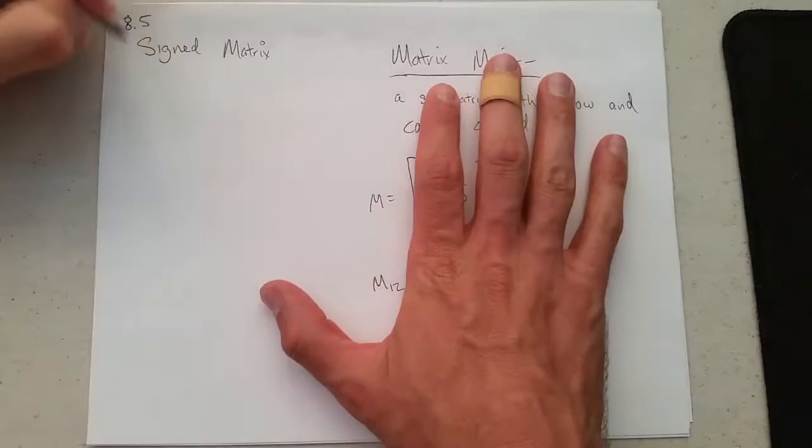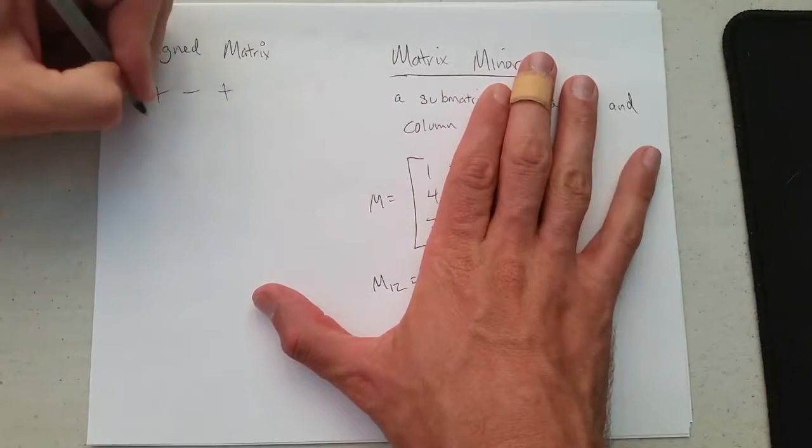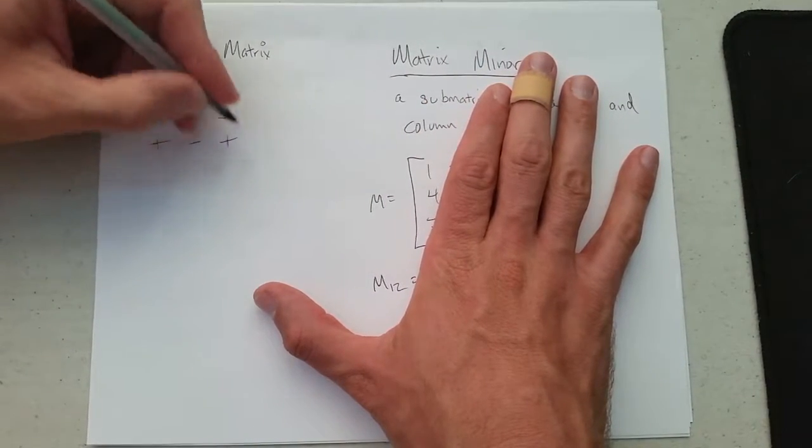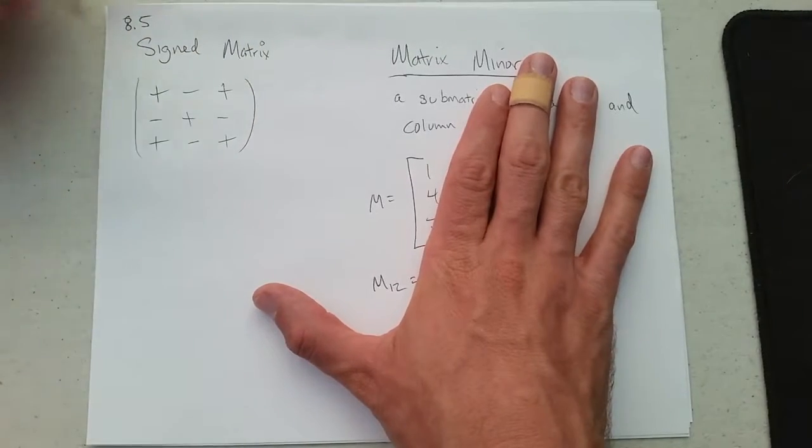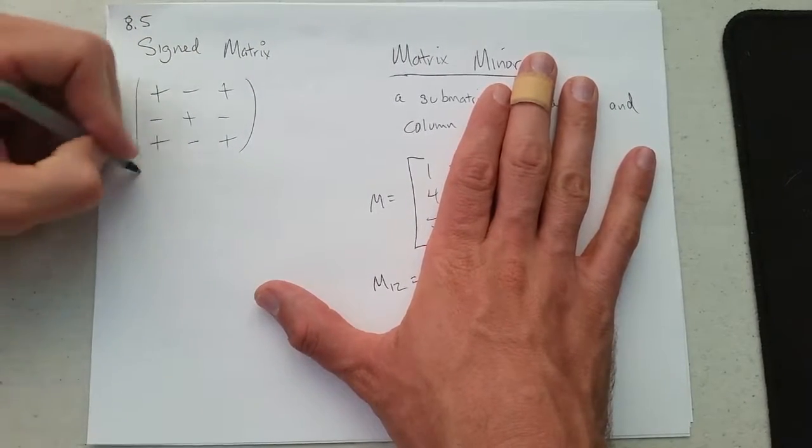So what is a sine matrix? It just alternates. We're only using square matrices, so here's a 3 by 3 sine matrix.